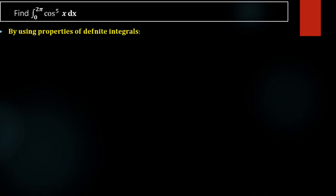By using the properties of definite integral, we know that integral 0 to 2a of f(x) dx equals integral 0 to a of f(x) dx plus integral 0 to a of f(2a − x) dx.